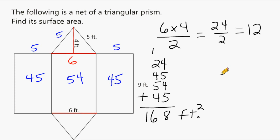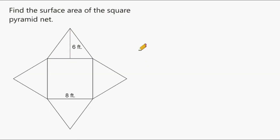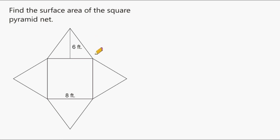Let's go ahead and do just one more example involving surface area. In this problem we have a square pyramid. What we should note about a square pyramid is that the four triangular surfaces are congruent to each other. So if we find the area of one triangle, we can multiply that by 4. Don't forget we also have a square in the middle — this square is an 8 by 8 square, which is just 64. So right away I'll write 64 for the area of the square base.